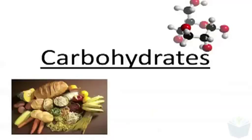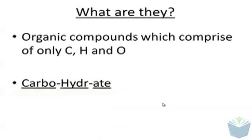Hi and welcome to my first video in this series about carbohydrates. Today we are going to look at mono and disaccharides. Carbohydrates are organic compounds made of three elements: carbon, hydrogen, and oxygen. Hence the phrase 'carbo' for carbon and 'hydrate' meaning to add water, since water is H2O, and so you form the word carbohydrate.